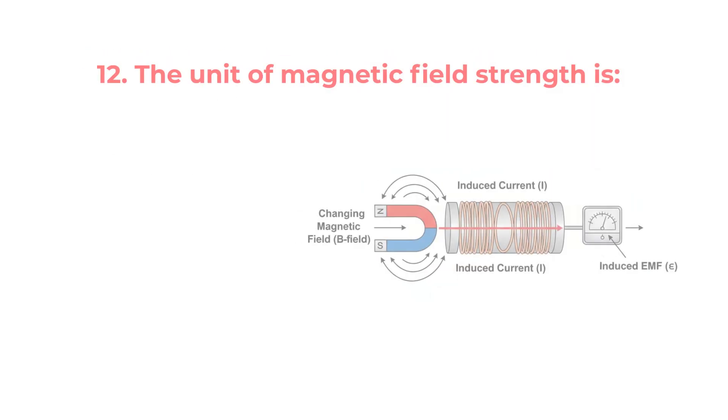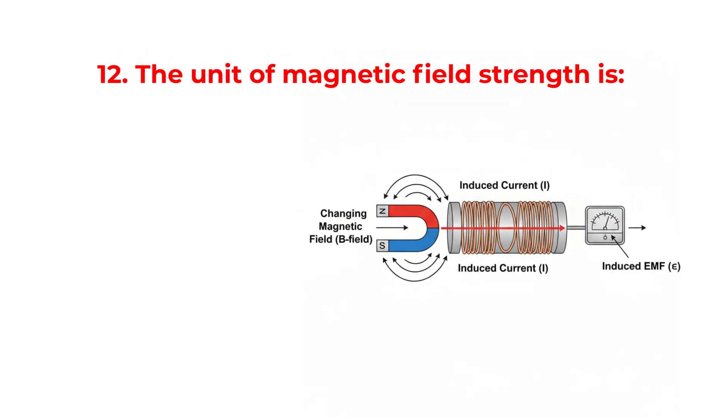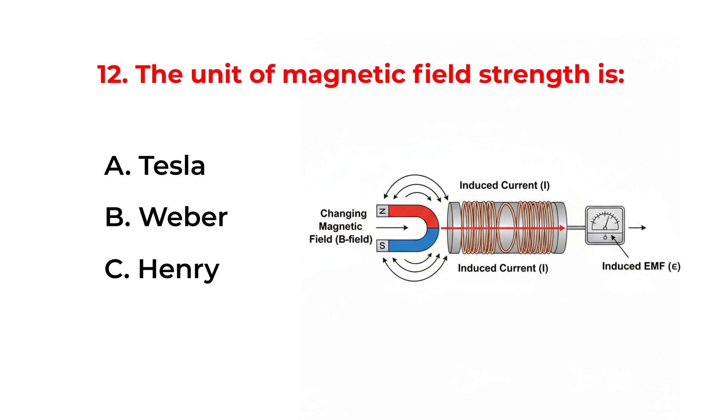The unit of magnetic field strength is: A. Tesla. B. Weber. C. Henry. D. Newton.